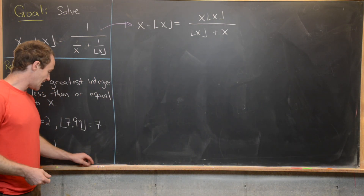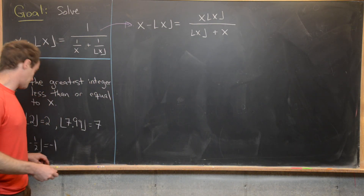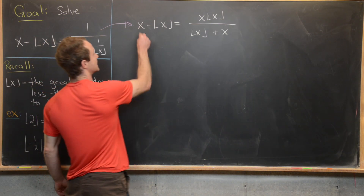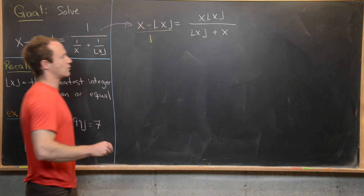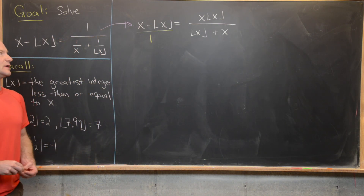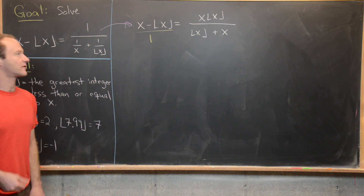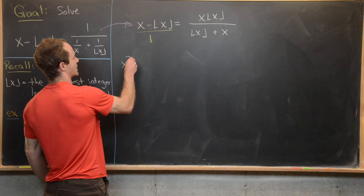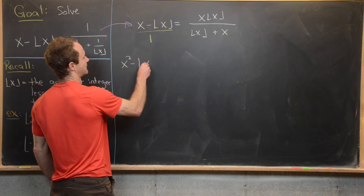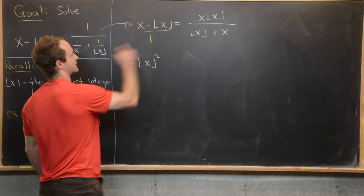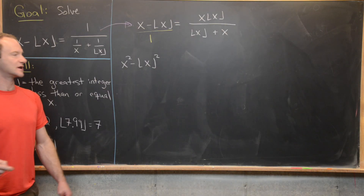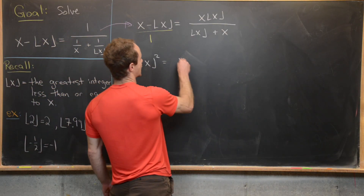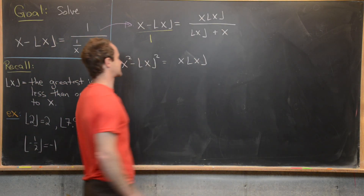Now we're well set up for cross-multiplying. We can think of the left-hand side as being over 1, then cross-multiply to totally get rid of the fractions. That gives us x squared minus floor(x) squared — a difference of squares — equals x times the floor of x.